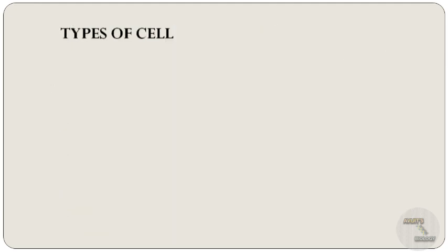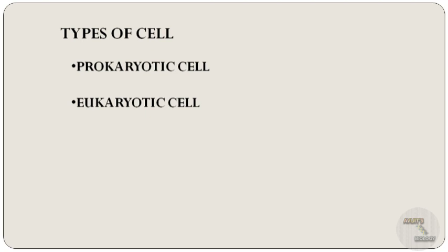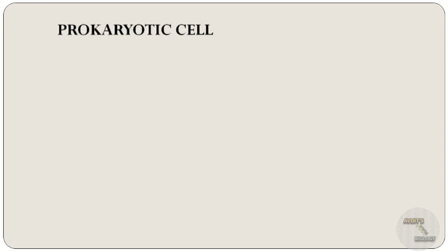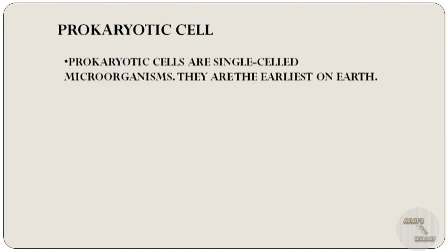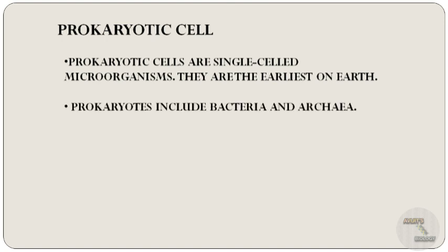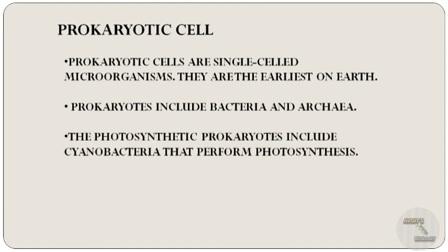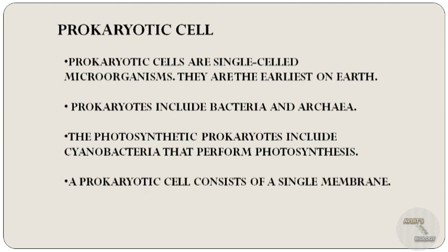Now let's move to the types of cells. Cells are basically of two types: prokaryotic cells and eukaryotic cells. In this video I will discuss about prokaryotic cells. Prokaryotic cells are single-celled or unicellular microorganisms known to be the earliest on earth. Prokaryotes include bacteria and archaea. The photosynthetic prokaryotes include cyanobacteria — bacteria that perform photosynthesis. A prokaryotic cell consists of a single membrane, so all the reactions occur within the cytoplasm of the cell.